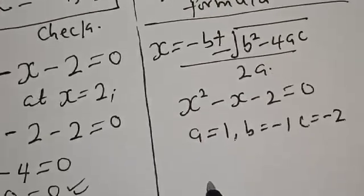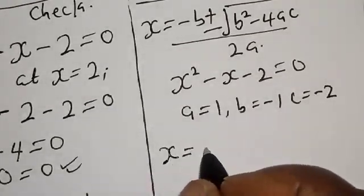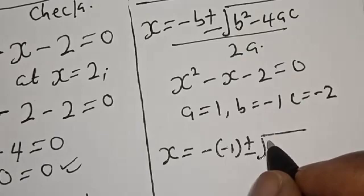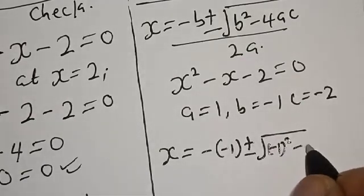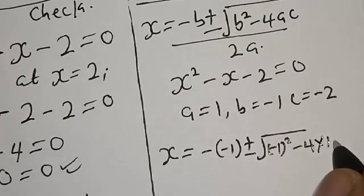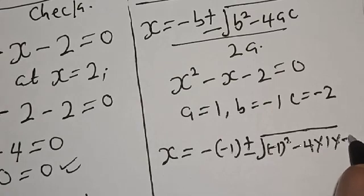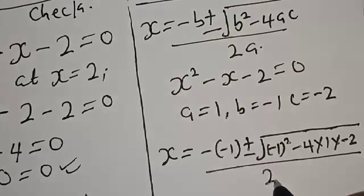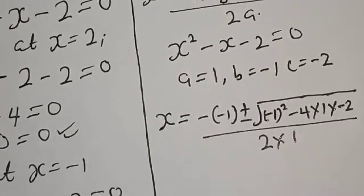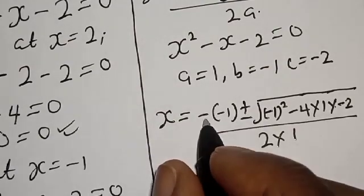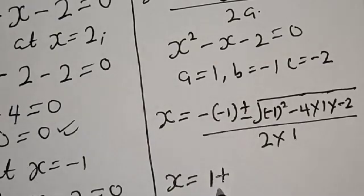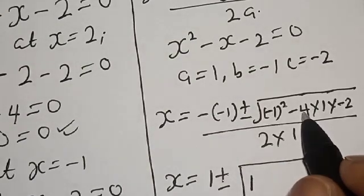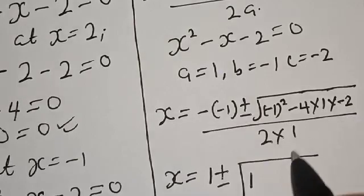Substituting into the formula: s equals minus(minus 1) plus or minus square root of (minus 1) squared minus 4 times 1 times (minus 2), divided by 2 times 1. This simplifies to 1 plus or minus square root of 1 plus 8, over 2.